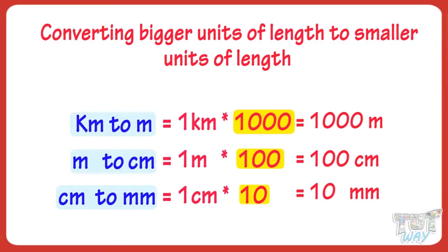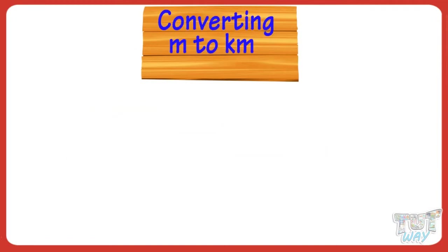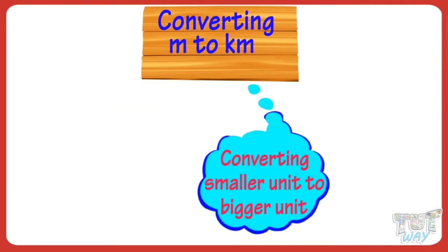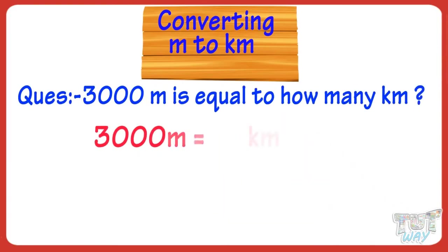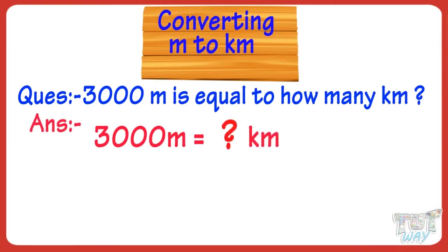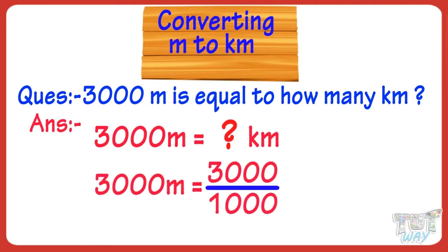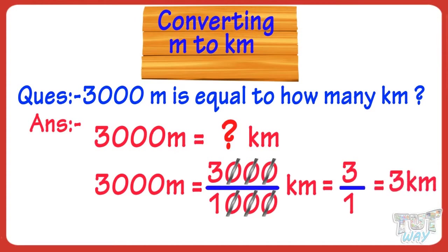Now let's learn converting meters to kilometers — that is, smaller unit to bigger unit. Whenever we convert a smaller unit to a bigger unit, we divide. 3,000 meters equals how many kilometers? We will divide by 1,000. So 3,000 meters equals 3,000 divided by 1,000 kilometers. Cutting three zeros, we get 3. So 3,000 meters equals 3 kilometers.